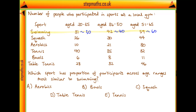What are the ratios we're looking for? We want the number for the youngest age range to be about half of that for the oldest age range. We also want the youngest age range to be about three quarters of that for the middle age range. So can we rule out any sports using that information?